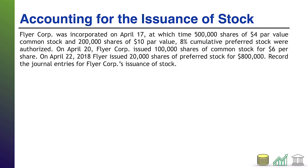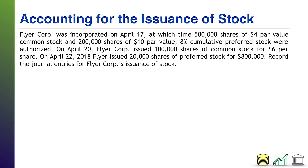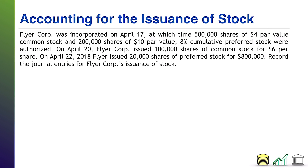Next up, accounting for the issuance of stock. FlyerCore was incorporated on April 17th, at which time 500,000 shares of $4 par value common stock and 200,000 shares of $10 par value 8% cumulative preferred stock were authorized. The key events are: on April 20th, FlyerCore issued 100,000 shares of common stock, and on April 22nd, they issued 20,000 shares of preferred stock. Record the journal entries for the issuance. Pause the video, see if you can work through it, and come back when you're ready.